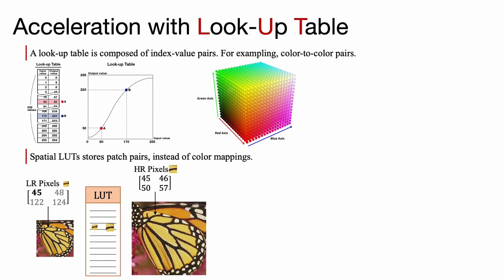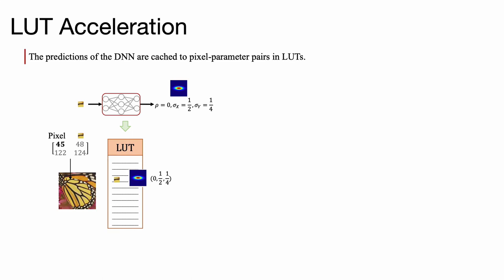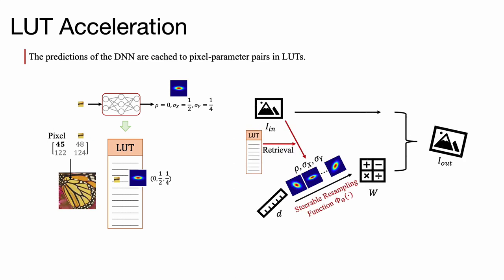Spatial LAT stores patch pairs, such as low resolution and high resolution pixels. In this work, we adopt LATs to store pairs of image pixels and learned hyperparameters by the DNN. For each pixel and its local region, we pre-compute the predicted hyperparameters and cache them in a LAT. This way, hyperparameters can be retrieved directly from the saved values in LATs, skipping computations in DNN and thus resulting in high efficiency.